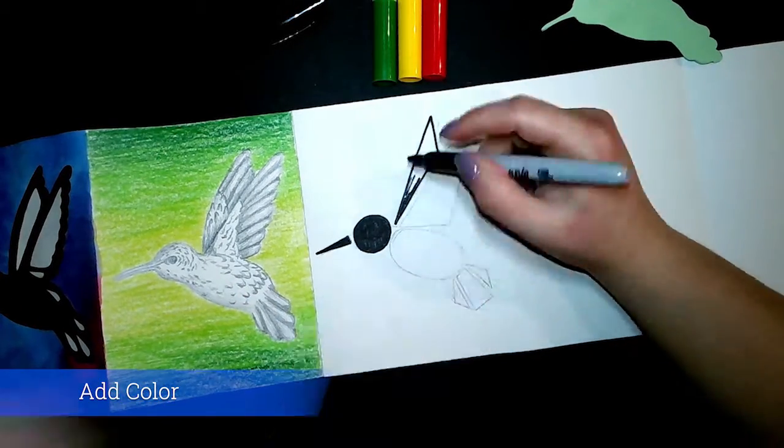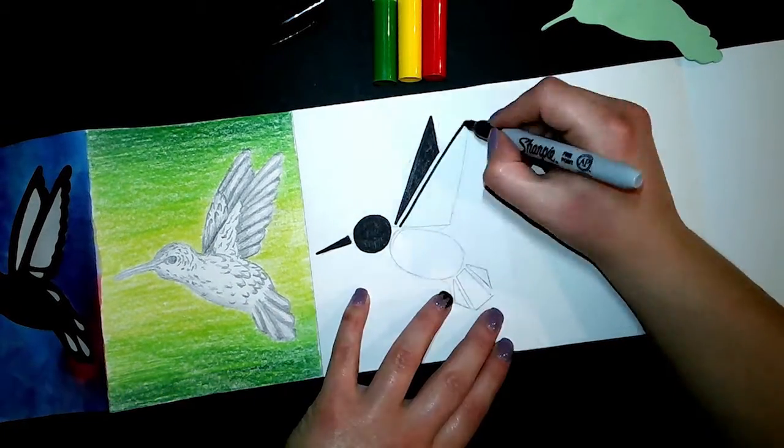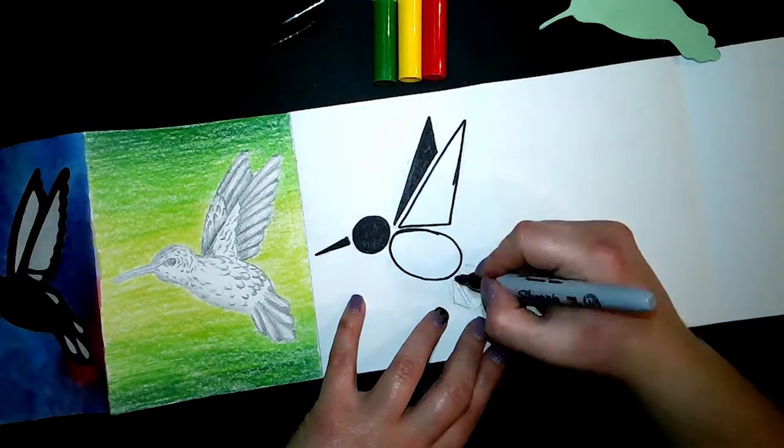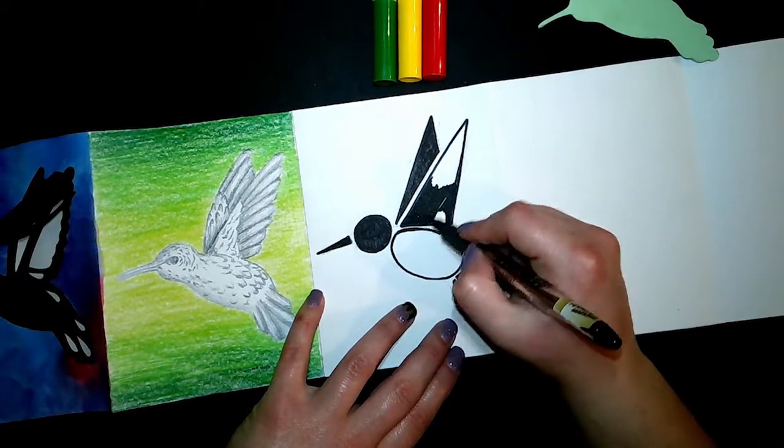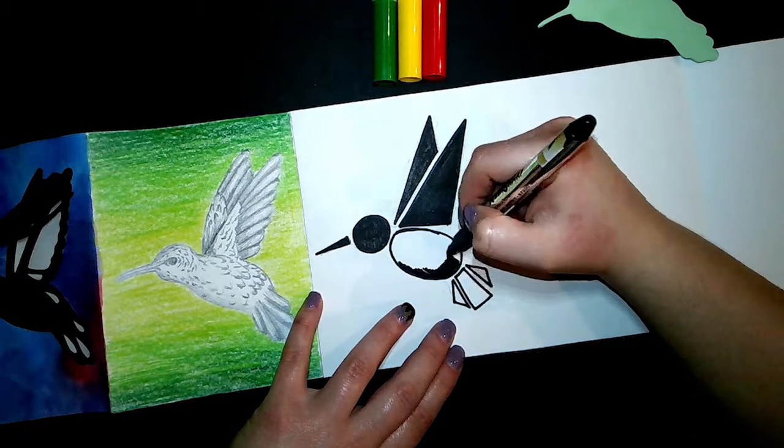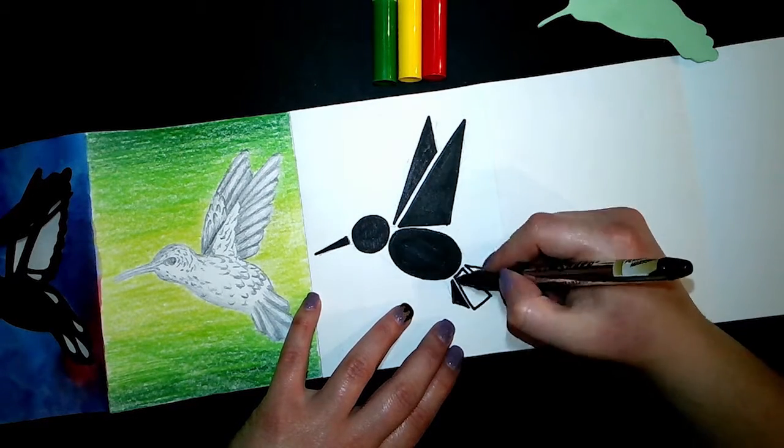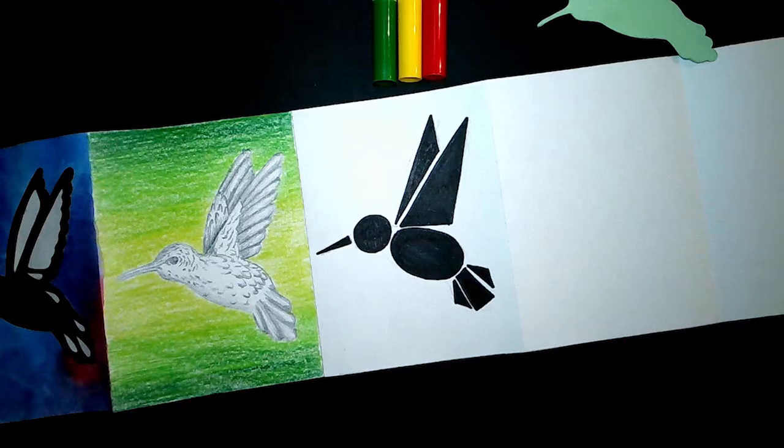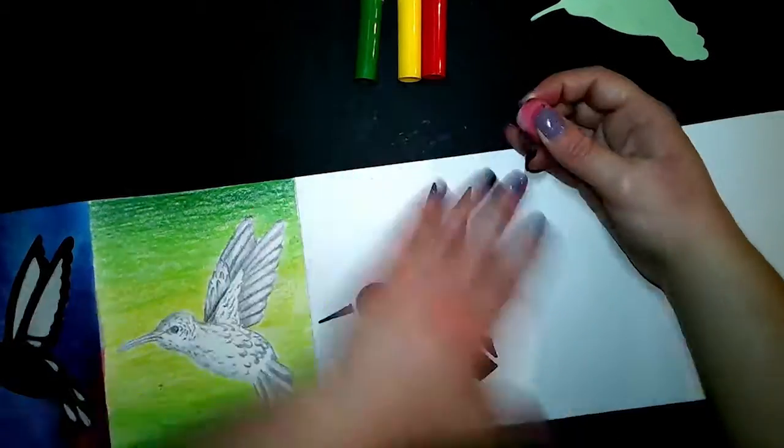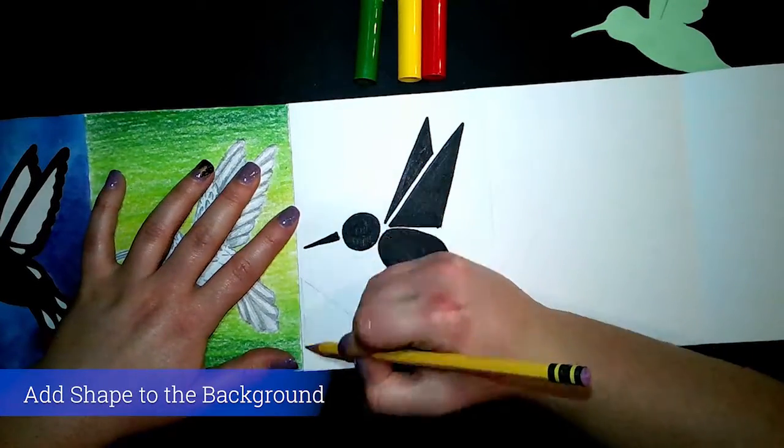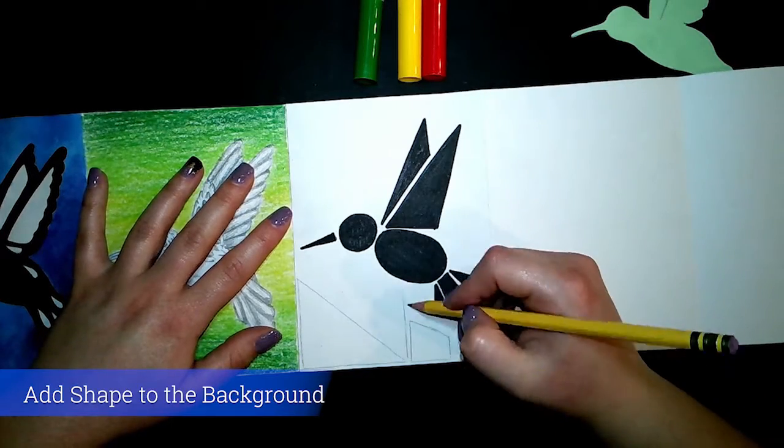To make my hummingbird stand out from the background that I will later add, I decided to go in and make each shape black. Now I'm going to go back and add shapes to the background.